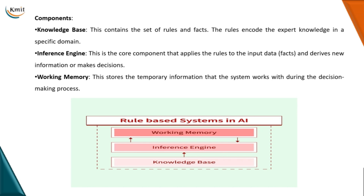Finally, we have working memory, which stores temporary information that the system works with during the decision-making process. Rule-based systems capitalize on expert knowledge — these rules are incorporated, creating a pool of specialized knowledge that enables the system to work effectively. Working memory holds the specific data the system uses in its operations, the facts and figures to which the inference engine applies its rules in its relentless pursuit of arriving at logical conclusions.